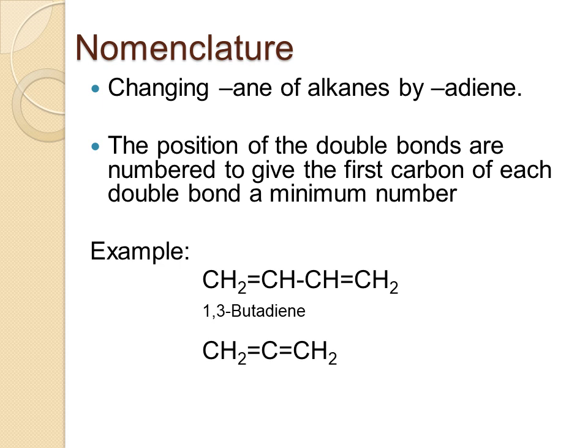Let us see another example: CH2=C=CH2. Here we have 3 carbon atoms, so it should be a derivative of propane. The double bond is at the first carbon and the second carbon, so the name is 1,2-propadiene. I hope the naming is clear with these examples.